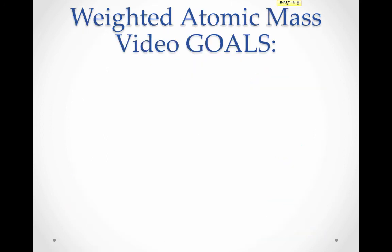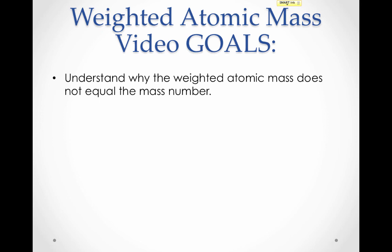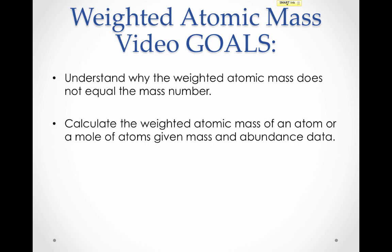That brings us to the end of this video. Let's review our goals. First, we looked at why the weighted atomic mass is not equal to the mass number — the weighted atomic mass is a weighted average of all isotopes of the element, whereas the mass number is simply protons plus neutrons for an individual atom. The mass number is reported in AMUs, whereas the weighted atomic mass can be in AMUs or grams. Finally, we learned to calculate the weighted atomic mass by multiplying mass times abundance for each isotope and adding those values together.